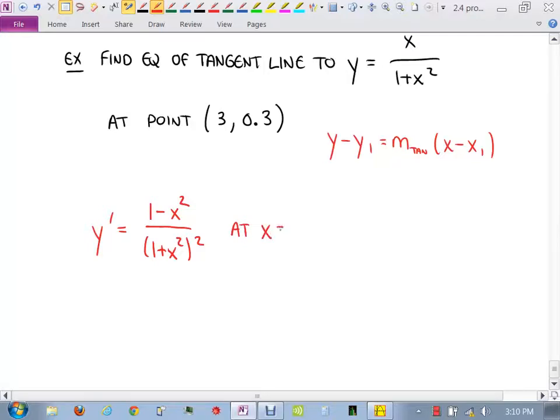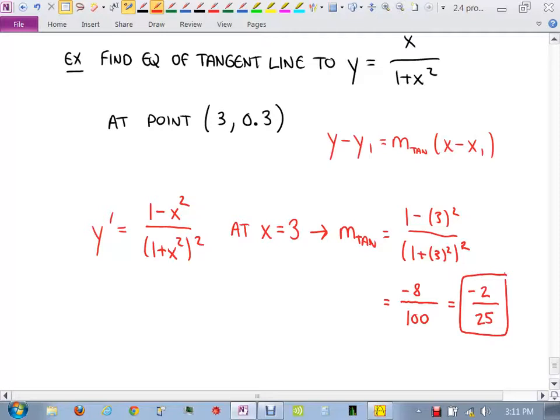At x equals what value, what do we get? At x equals 3, we get that the slope of the tangent line would then be 1 minus 3 squared over 1 plus 3 squared squared. 3 squared is 9, so negative 8 over 10 squared, 100 on the bottom. All right, 3 squared is 9 plus 1, it's 10, 10 squared is 100. Negative, what goes into those both? 4 goes into 2, 25ths. Negative 2 25ths. That's just the slope of the tangent line.